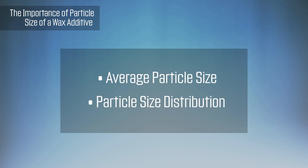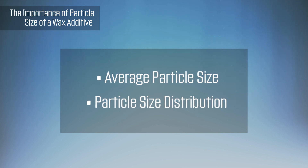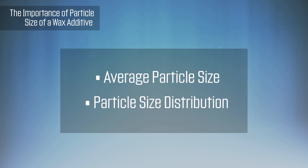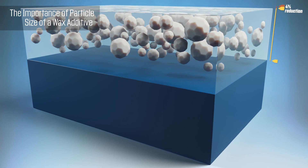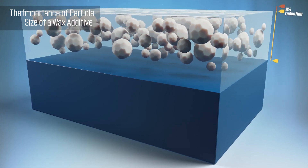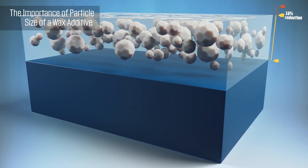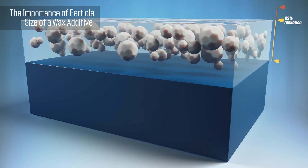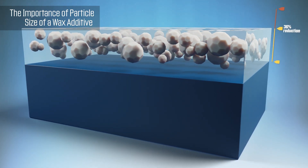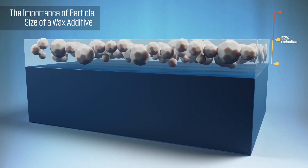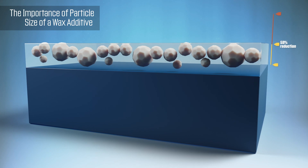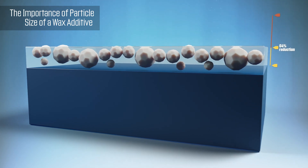There are two important particle size parameters that impact the performance of a wax additive: average particle size and particle size distribution. While all particles migrate to the surface, the optimal size particles around DV50 provide the targeted performance properties. Significantly larger wax particles can cause surface film defects, while significantly smaller wax particles tend to remain below the surface and do not impact surface properties.